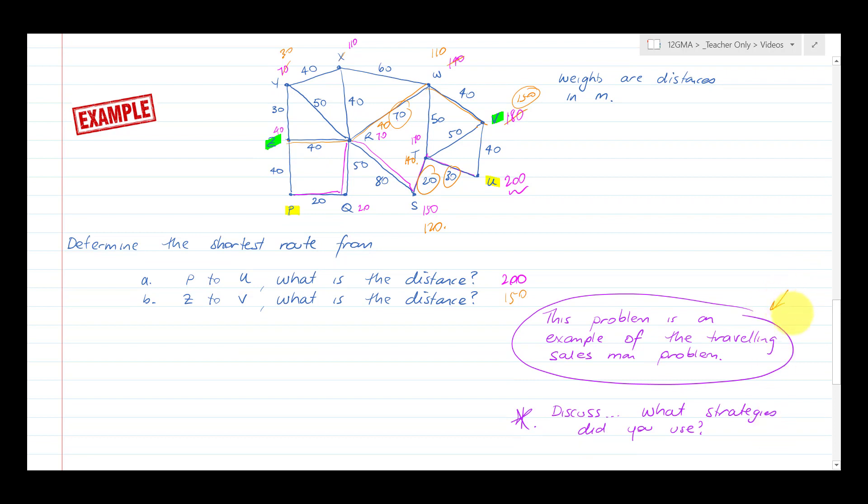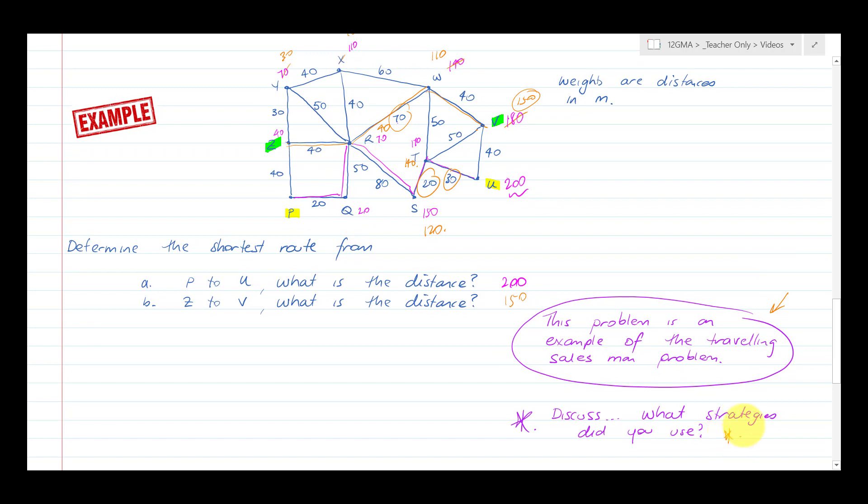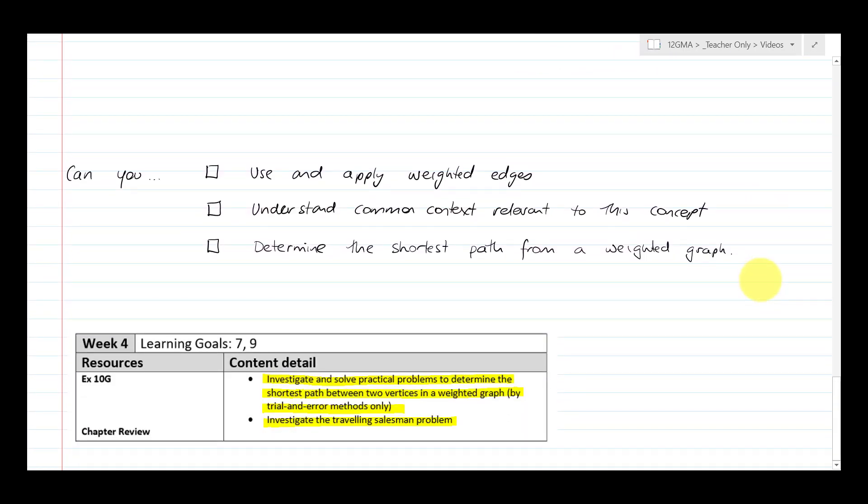So it's an example of a traveling problem, the traveling salesman problem, and it's quite hard. It says here discuss the strategies you've used. Well, I've just given you some strategies. So that's the end of our video series. Hopefully you can use and apply weighted edges, understand common context relevant to this concept, and determine the shortest path from a weighted graph using a little bit of design and trial and error. Thanks for watching the videos. Feel free to pop me an email or have a chat to me on Teams if you have any questions. All the best.